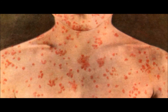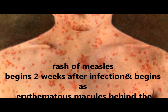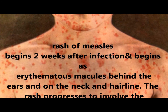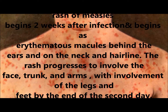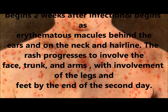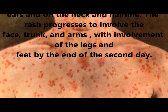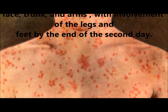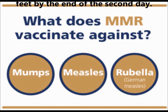The rash of measles begins two weeks after infection. It begins as erythematous macules behind the ears and on the neck and hairline, then progresses to involve the face, trunk, and arms, with involvement of the legs and feet by the end of the second day.